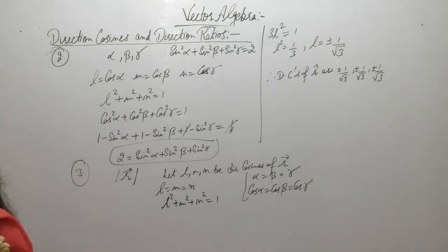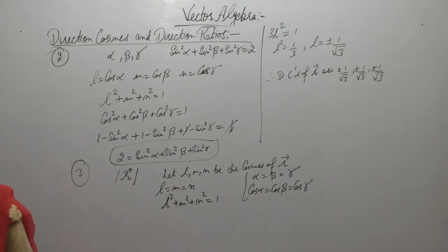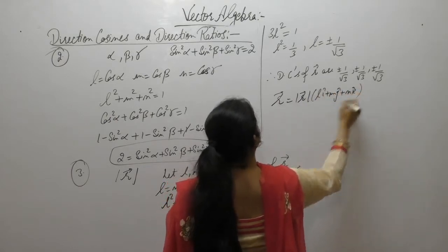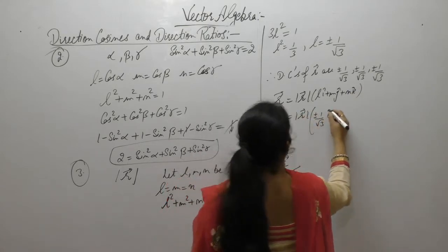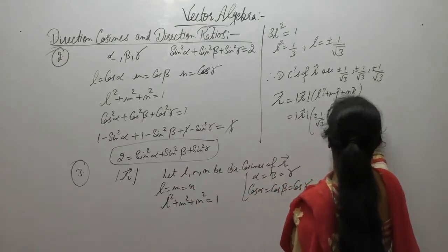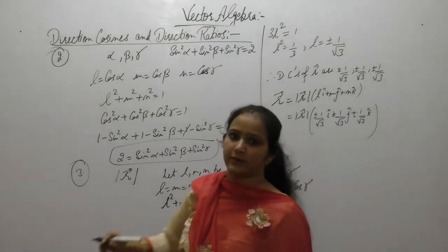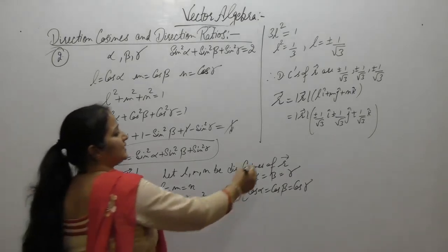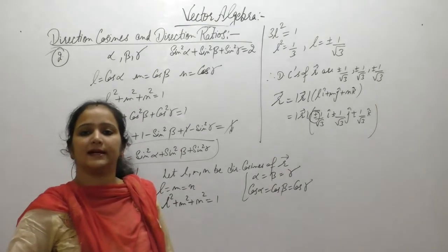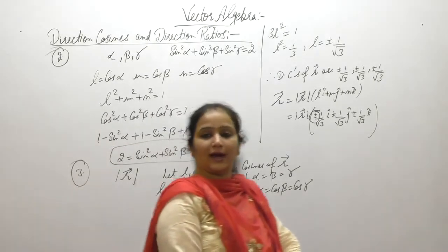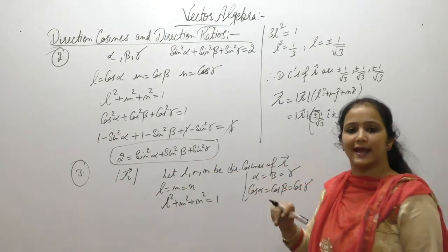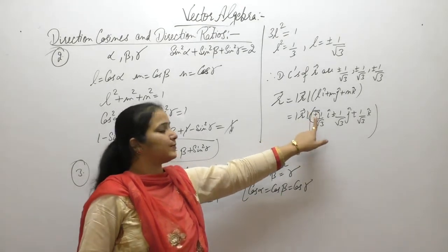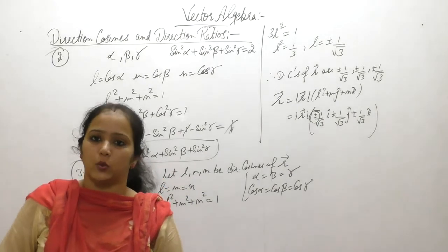Now to find the total number of such vectors: R = |R| (l·î + m·ĵ + n·k̂) = |R| (±1/√3 î ± 1/√3 ĵ ± 1/√3 k̂). Since each of l, m, n has two possible signs (positive and negative), and there are three components, like coin toss combinations, these can be arranged in 2³ = 8 ways. Therefore there are 8 vectors of given magnitude which are equally inclined.